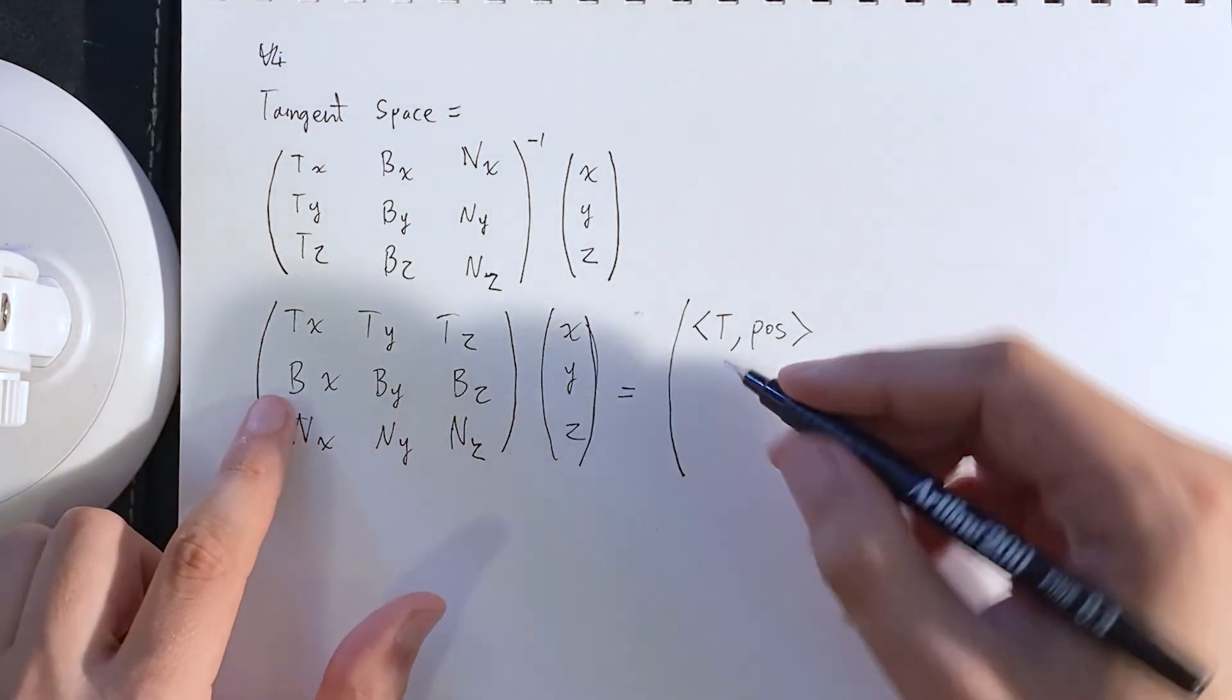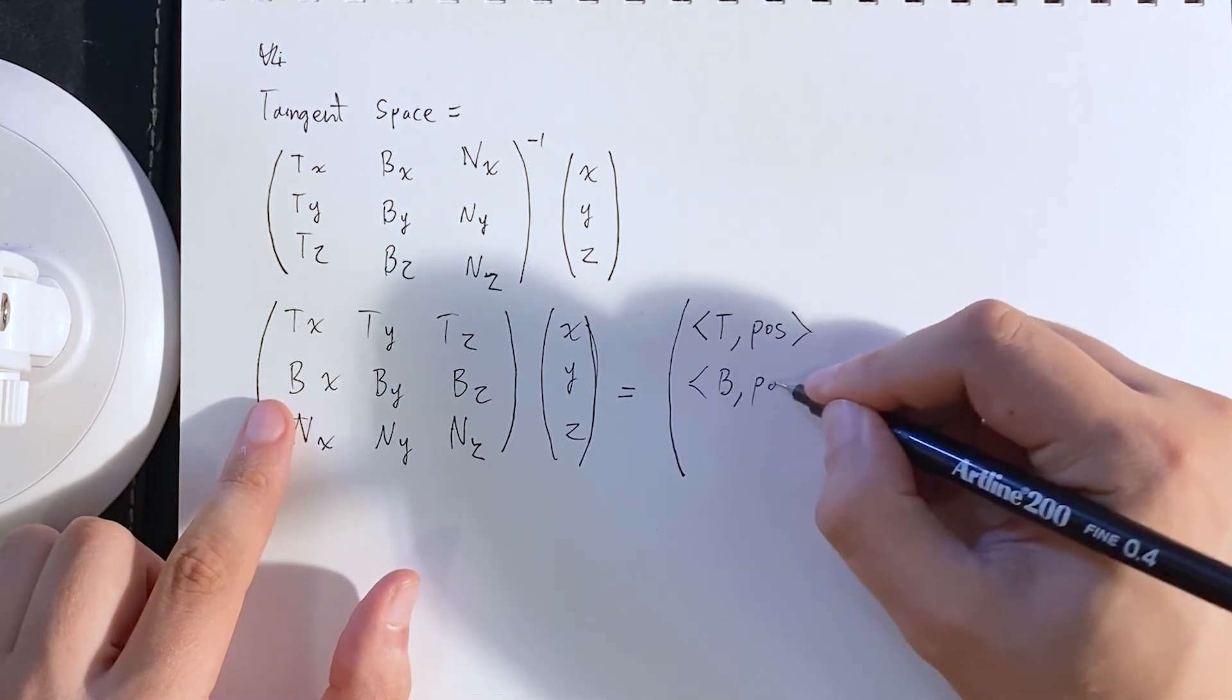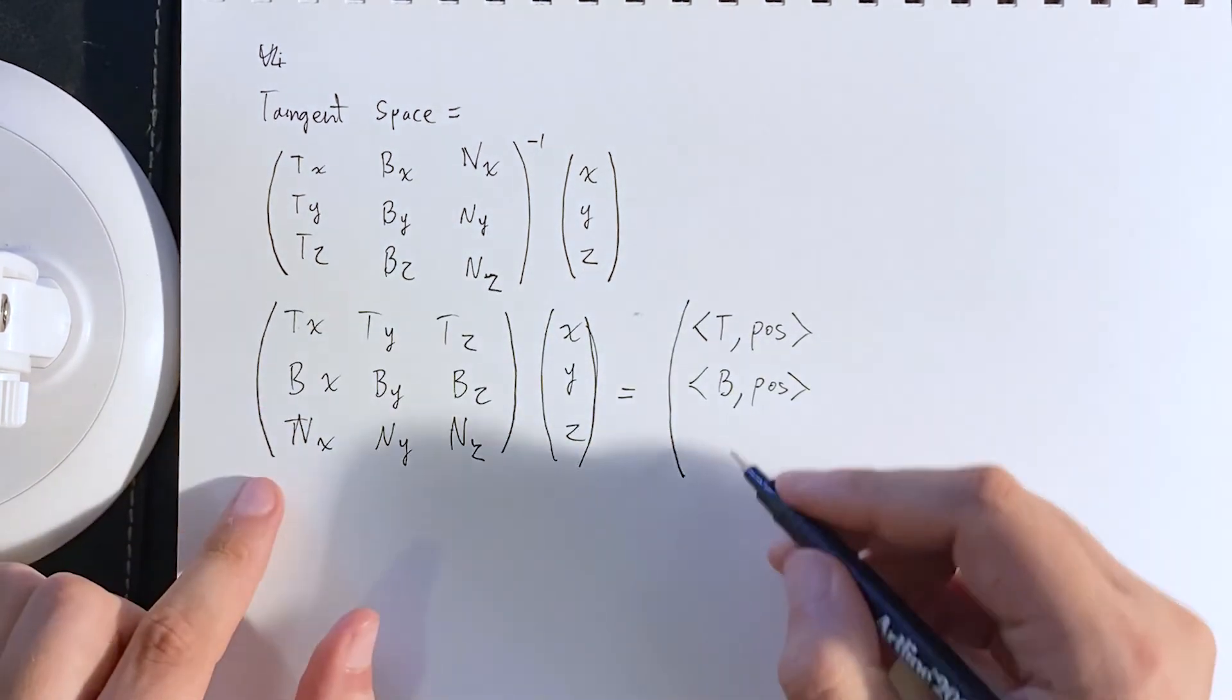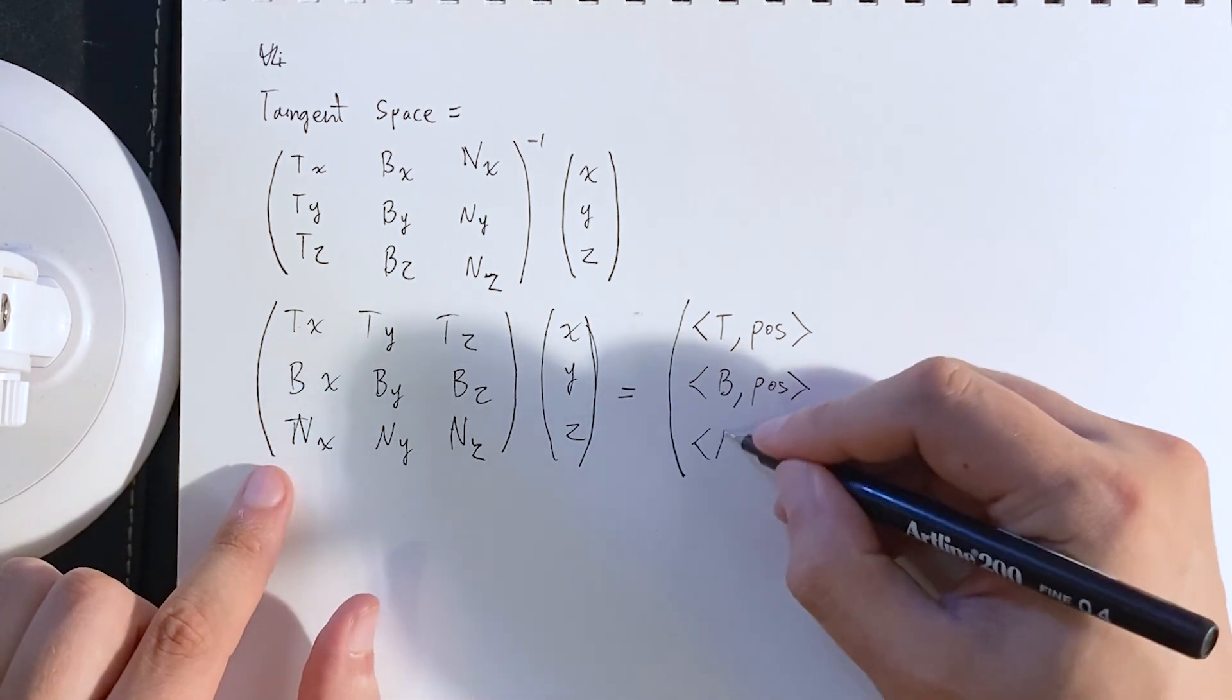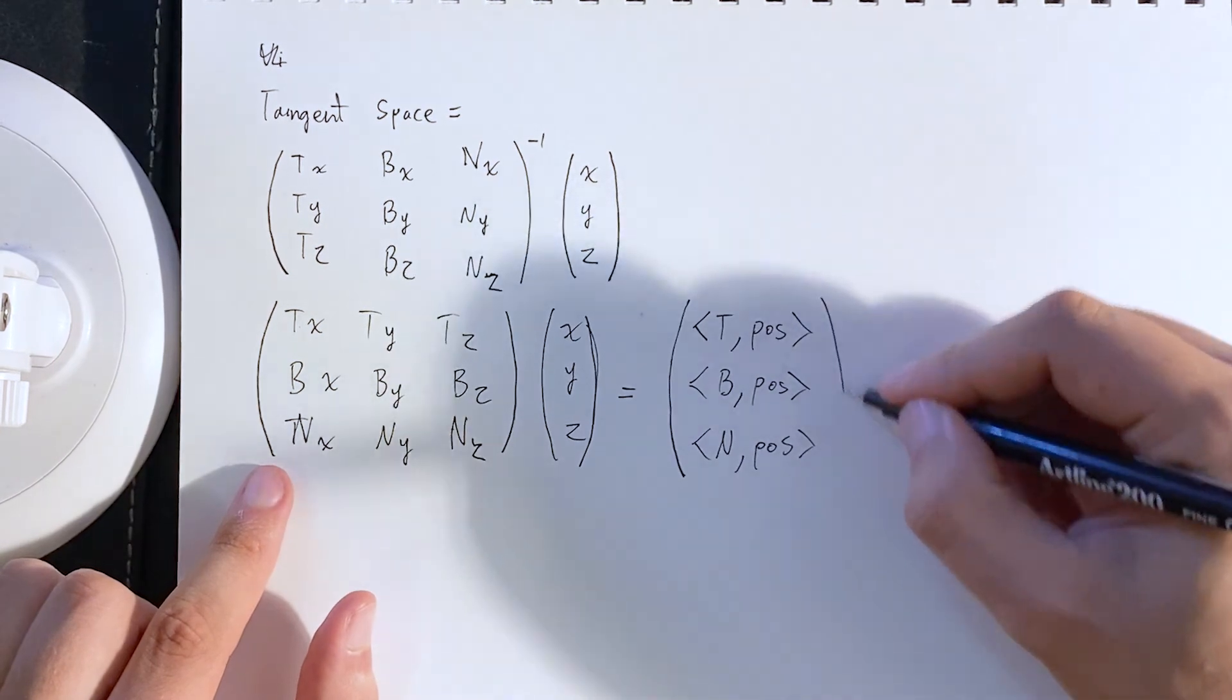And then the y coordinate will be the dot product of the bitangent with the position. And then the z coordinate will be the dot product of the normal with the position. We're not actually going to use this formula.